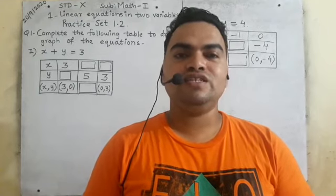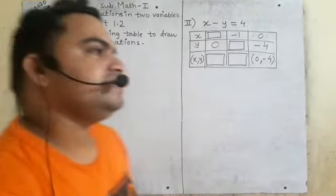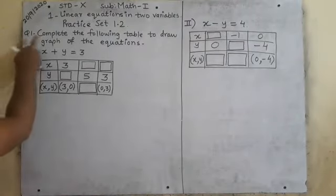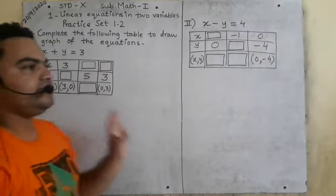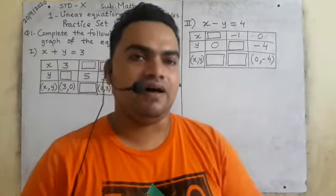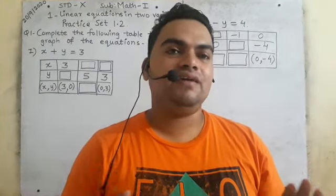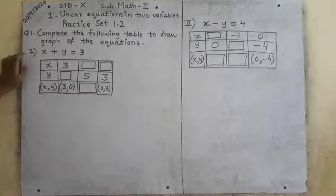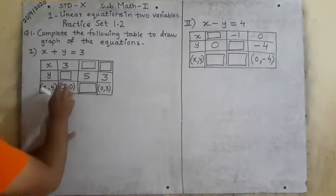But the first question is only about how to complete the table. Please look at the board. See here, Practice Set 1.2, Question Number 1: Complete the following table. The equation given is x plus y is equal to 3 and a table is given to you.